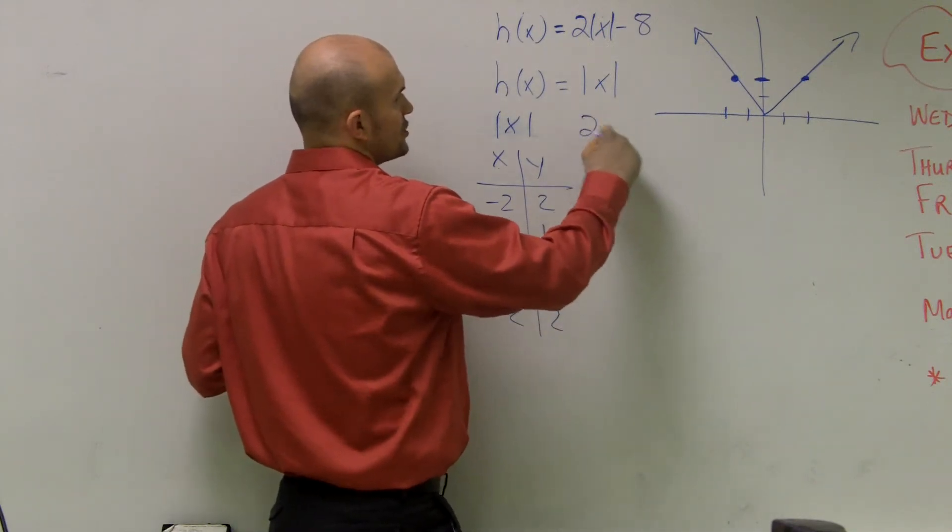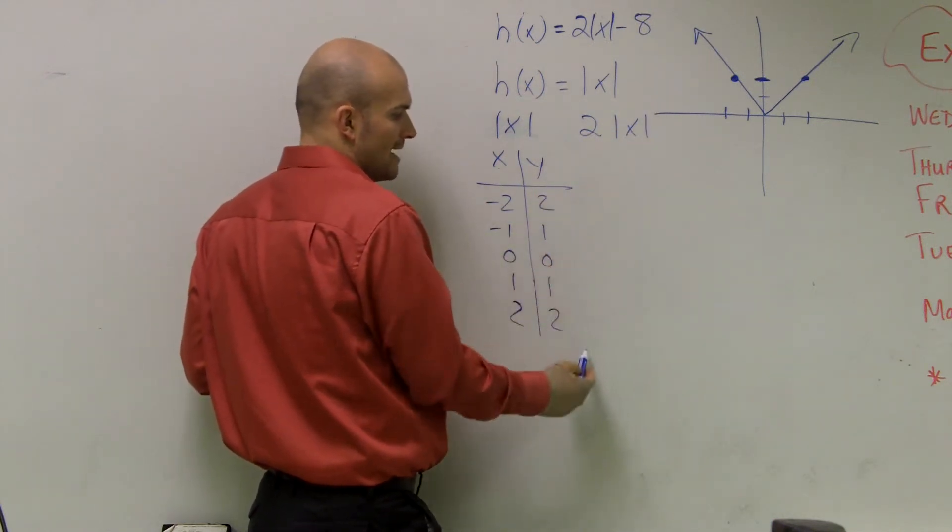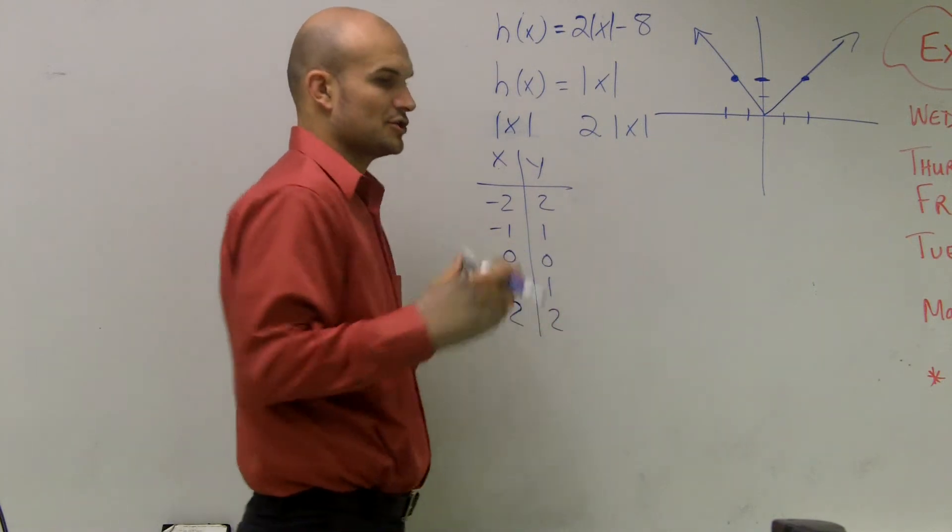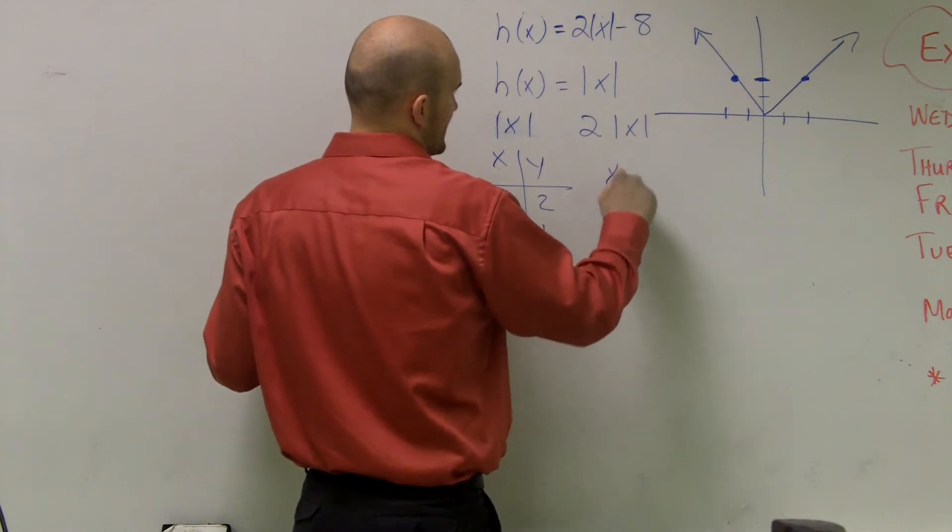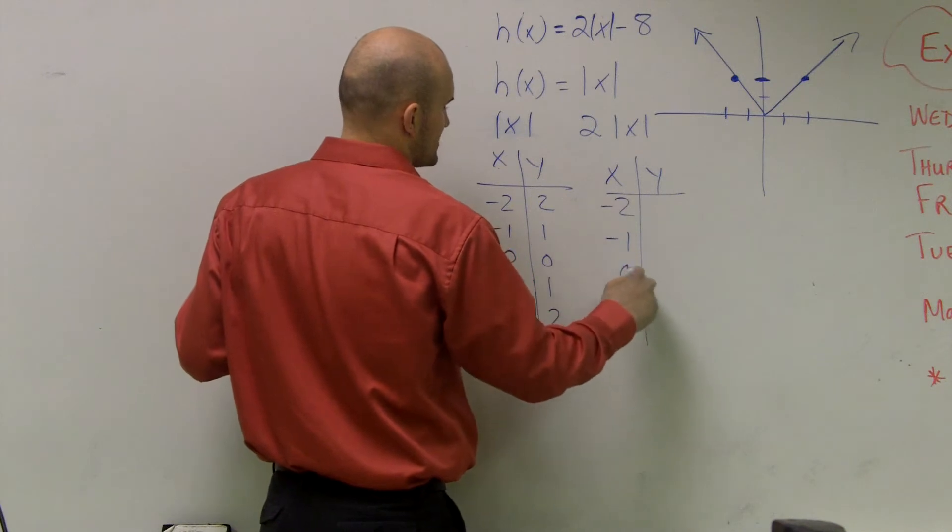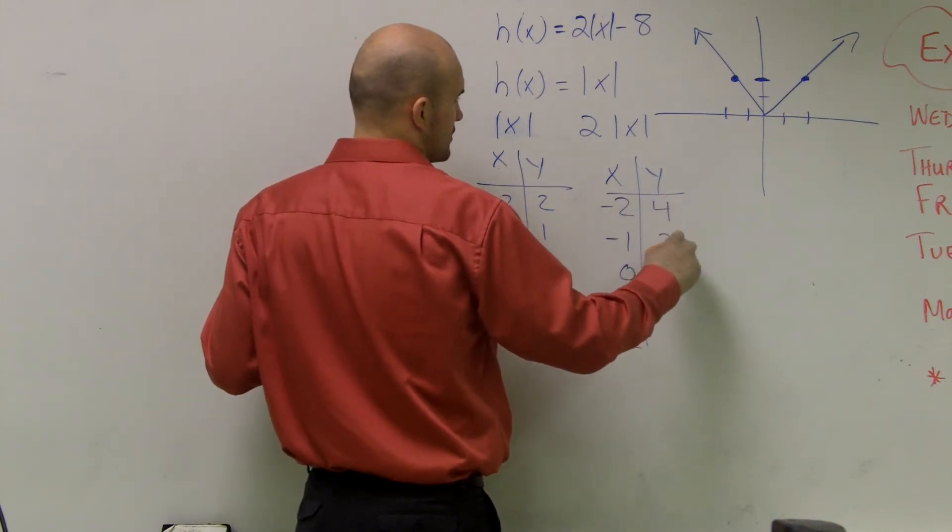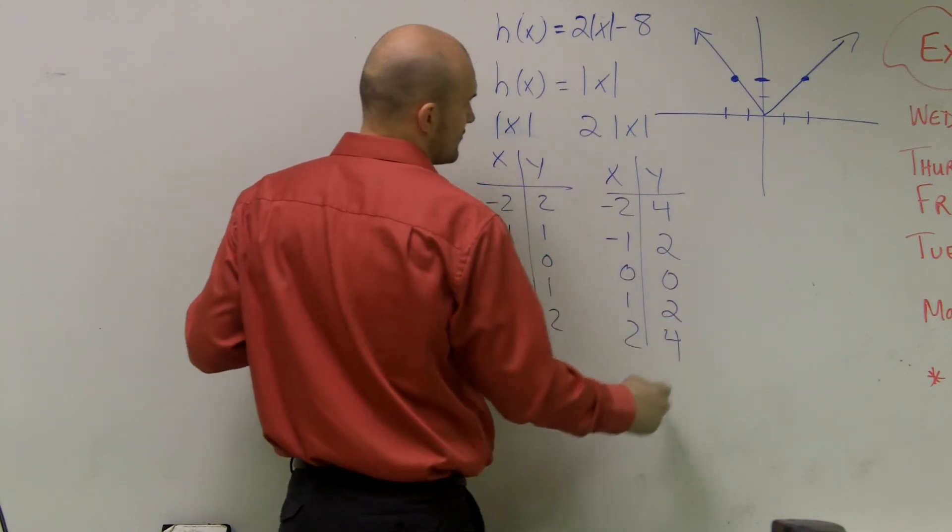Well, if I do 2 times absolute value of x, that's going to multiply all my output values by 2. So what I'm going to do is I'm actually going to vertically stretch my graph. So if I did an x, y table, I'd have negative 2, negative 1, 0, 1, and 2. But now I'm going to have 4, 2, 0, 2, and 4.